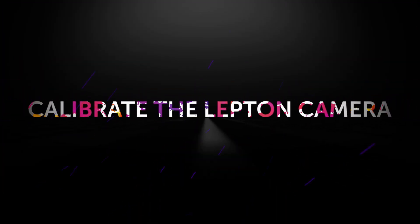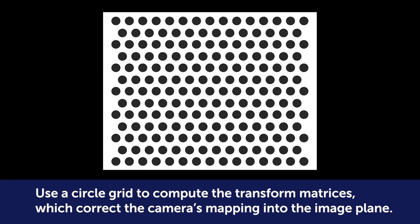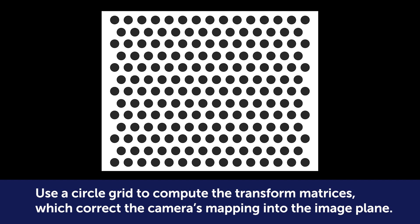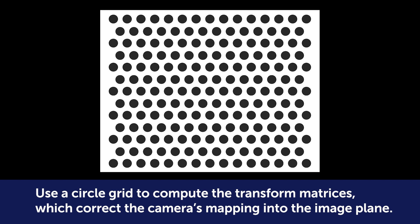Follow these steps to fix barrel distortion. Calibrate the camera using a circle grid to compute the transform matrices, which correct the camera's mapping into the image plane.